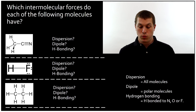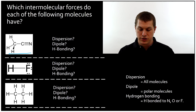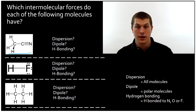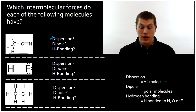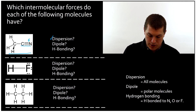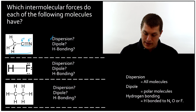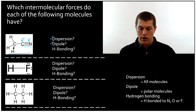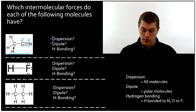Below we have a series of molecules, and they ask us what sort of forces do they have. First, let's look at this top molecule — it's called acetonitrile. Does it have dispersion forces? Well, of course it does, because all molecules have dispersion forces. Does it have a dipole? Here we have to decide — is it polar or not? And it turns out, because of this carbon-nitrogen bond, the nitrogen is partially negative and the carbon is partially positive, and that would make it polar, so it would have dipole forces. Does it have hydrogen bonding? Well, nowhere in there is a hydrogen directly connected to an F, an N, or an O. So no hydrogen bonding.